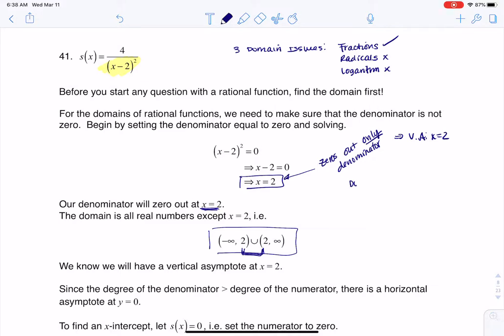So if we're keeping track of some traits so far, my domain is negative infinity to 2 and then 2 to infinity. I have a vertical asymptote at x equaling 2. Let's go after the intercepts right now.